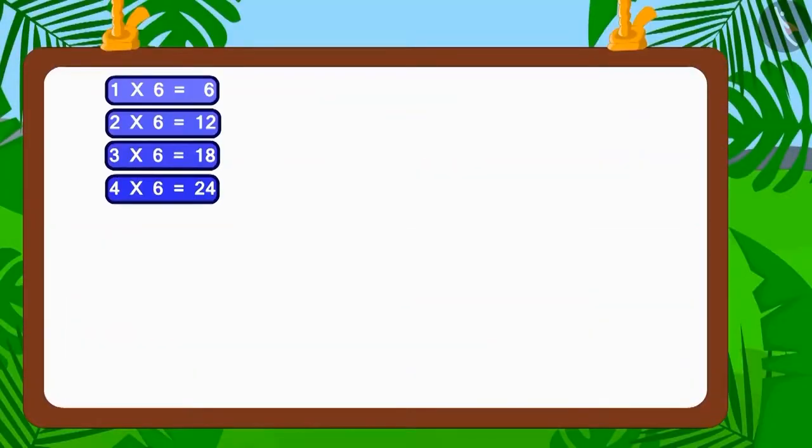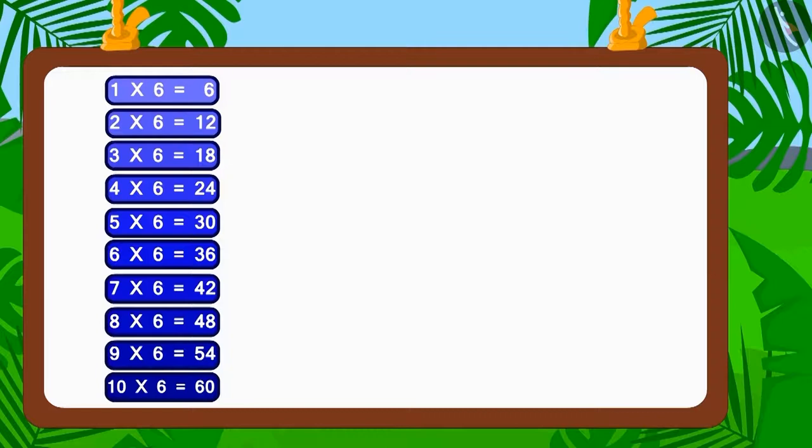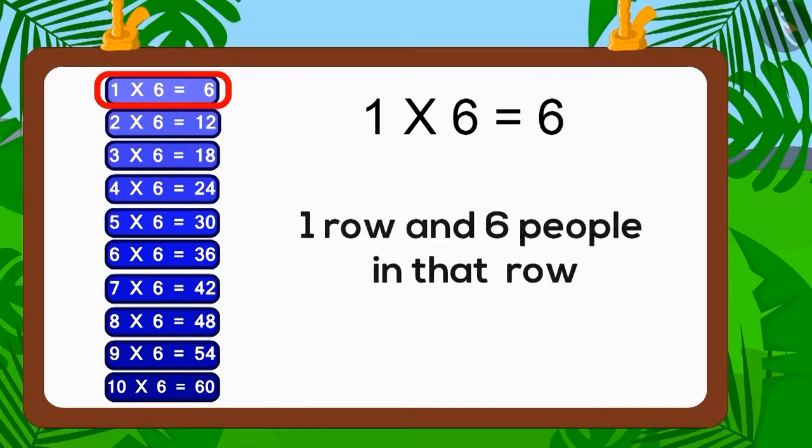Now, let's look at the table of six. Does the number six appear in the table of six? Yes, one multiplied with six is six. Therefore, six is also the factor of number six. So, one line and six people in each line is a good option.